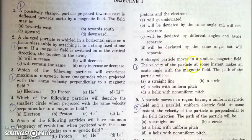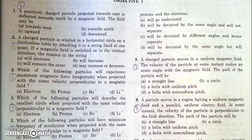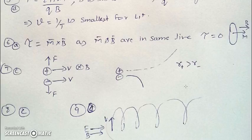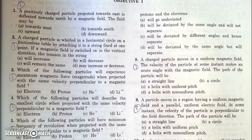In the next question, there is a charged particle moving in a uniform magnetic field. The velocity at some instant makes an acute angle with the magnetic field. The path of the particle will be helical with uniform pitch. Since magnetic field cannot change the speed, the component of velocity parallel to the magnetic field will take it in the forward direction, whereas the component perpendicular to the magnetic field will produce circular motion. So the motion will be helical with uniform pitch.